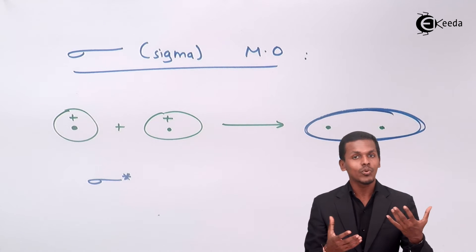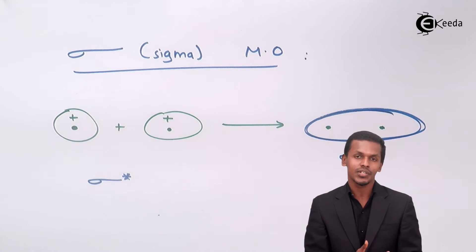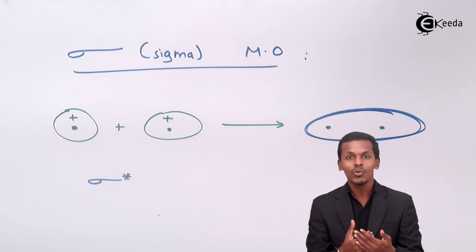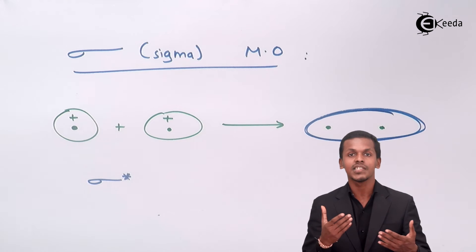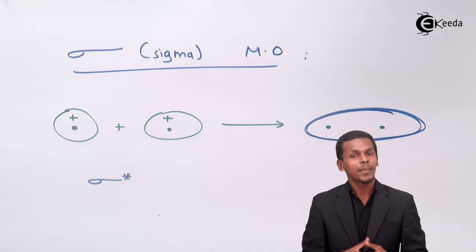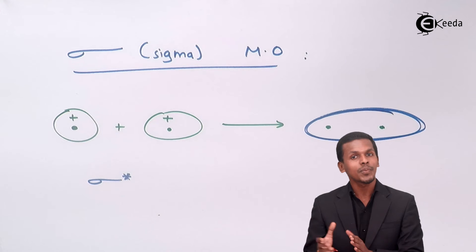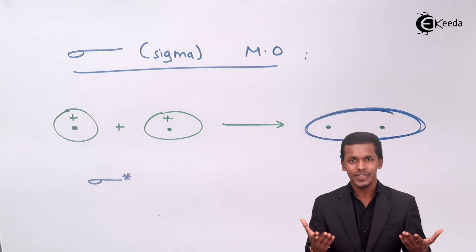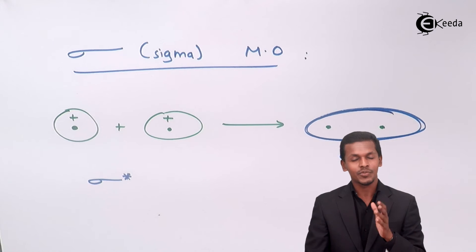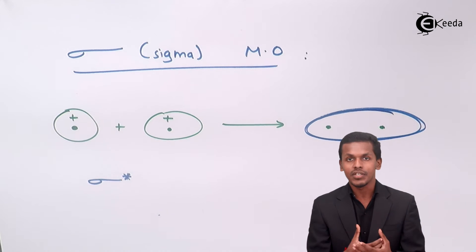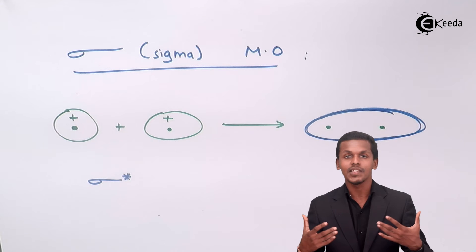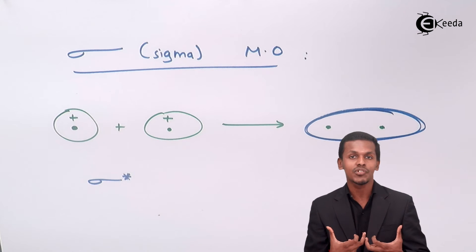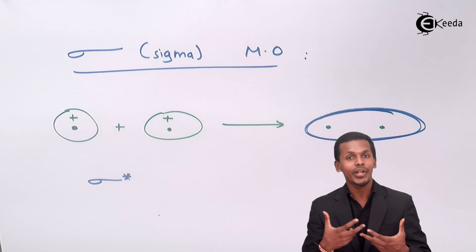Talking about the s orbital — whenever two s orbitals combine with each other they form sigma, because the overlapping is more, the symmetry is more, and the stability is very high. Regarding p orbitals, they are distributed into px, py, and pz. Talking about pz especially — whenever two pz orbitals combine with each other, they usually combine with a head-on collision, or coaxial overlapping.